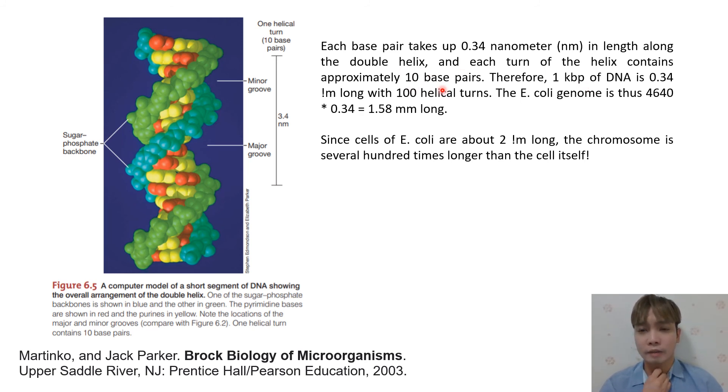Remember, E. coli has 4,640—I think this is kilobase pairs. And if we multiply it by nanometers, that would be equivalent to 1.58 millimeters long. So take note, the DNA is very long—like 1.58 millimeters in terms of length. But the actual size of E. coli is only around 2 micrometers long.